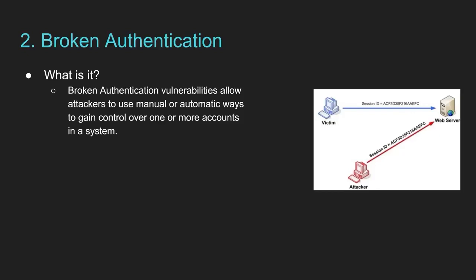The attacker can thereby make changes to the application in ways that the legitimate user has access to. A way to prevent this is to never deploy any default credentials, store passwords using a one-way hash function so that if your database of user accounts is leaked the passwords are not in plain text. You also need to ensure there is a limited number of authentication attempts to the server, so that a script cannot try a thousand different password combinations in a minute — because no real user would do that.